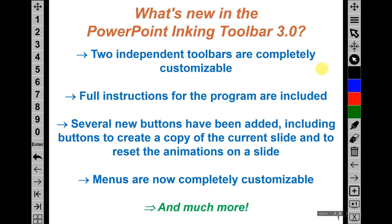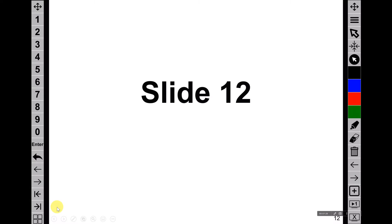In this default configuration, there are many functions that will allow you to navigate the PowerPoint presentation very efficiently. For example, there are the previous and next slide buttons right here. You can also go to the first slide and you can go to the last slide. One quick way to navigate to a slide is to use the numbers that are available in the default configuration of this second toolbar. For example, if you wanted to go directly to slide number 12, you can just punch in 12 and then hit enter, and you'll move directly to slide 12.